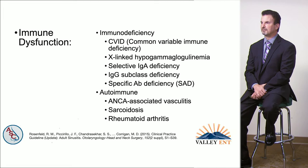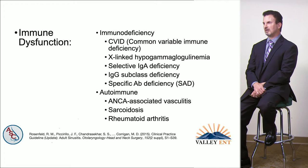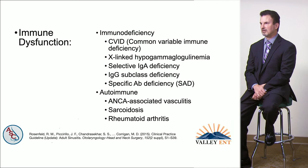Immune dysfunction can be immunodeficiency. Common immunodeficiencies are associated with chronic rhinosinusitis. It can also stem from an autoimmune condition such as ANCA-associated vasculitis like Churg-Strauss disorder or Wegener's granulomatosis. Other causes include sarcoidosis and rheumatoid arthritis.